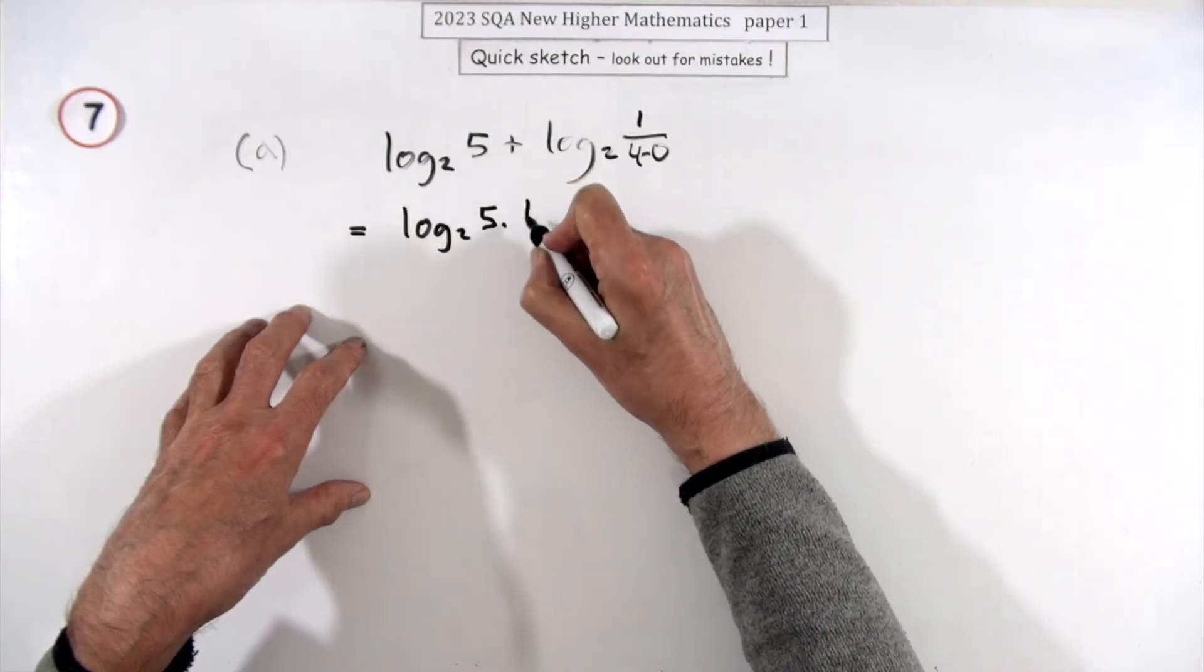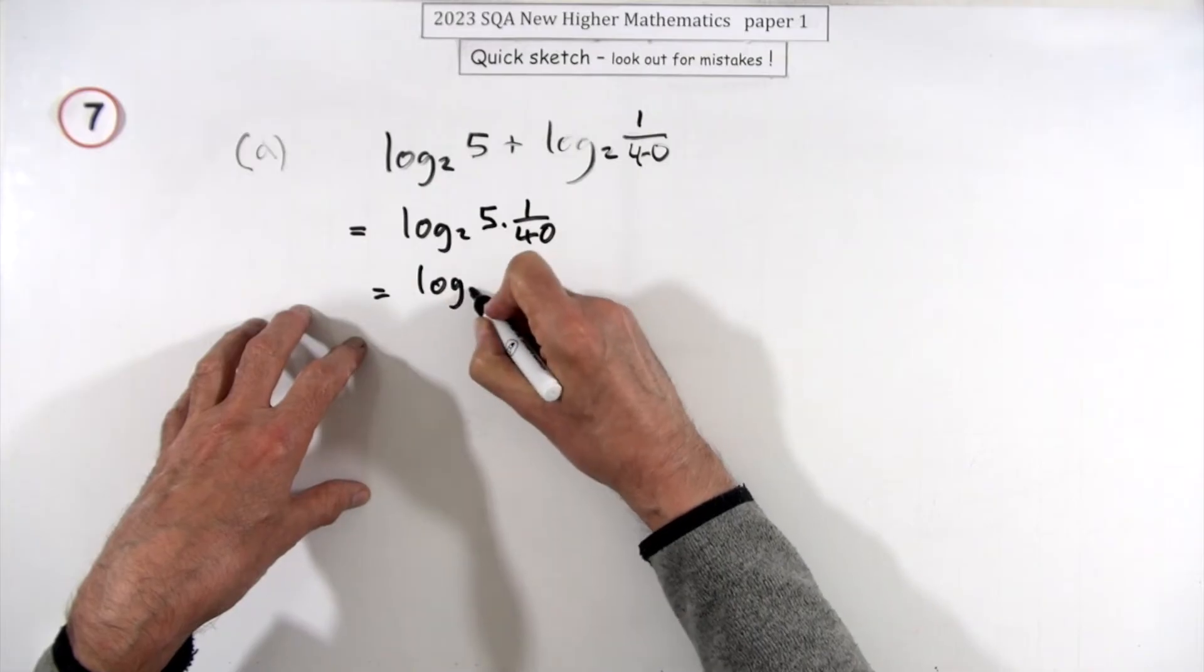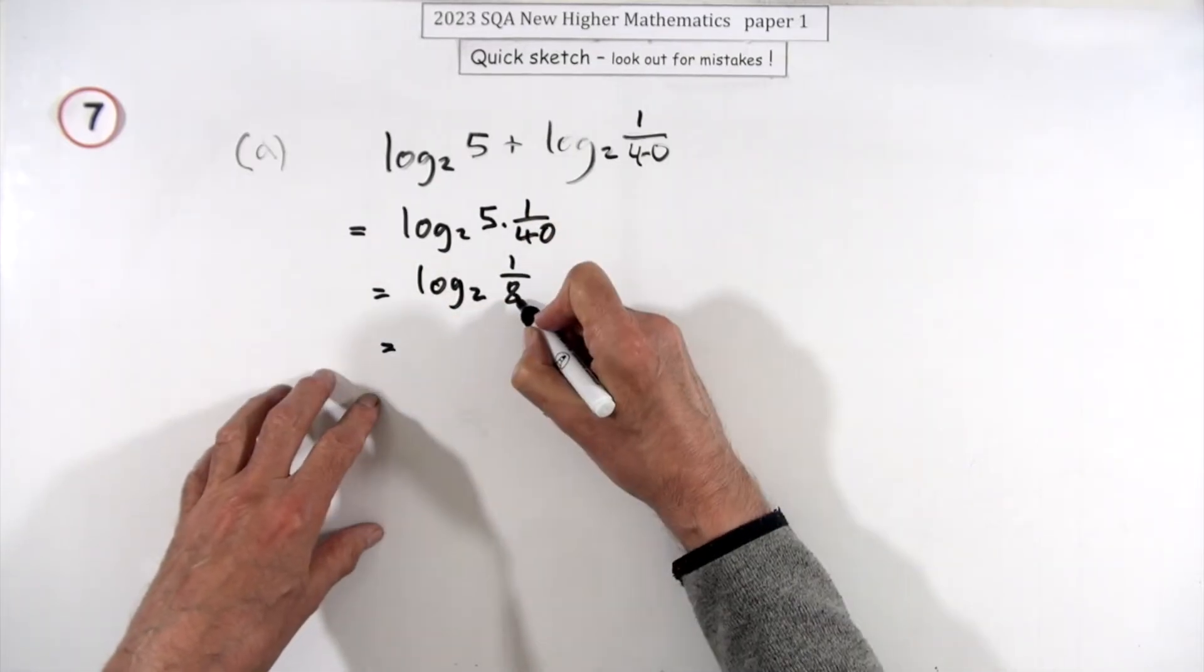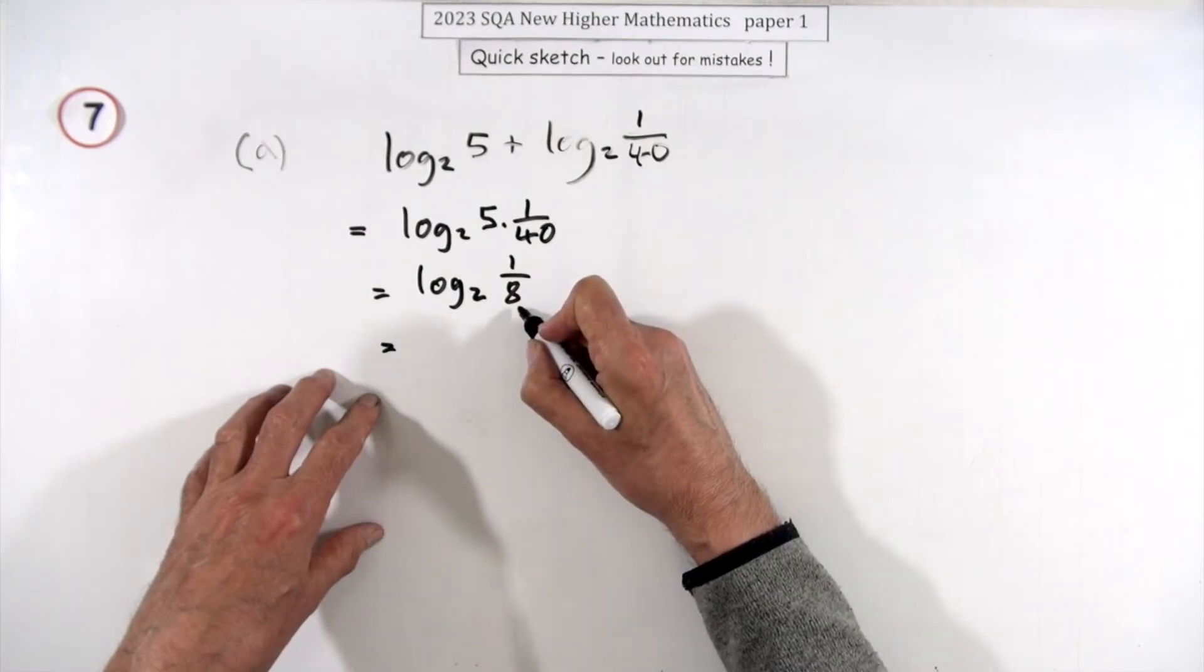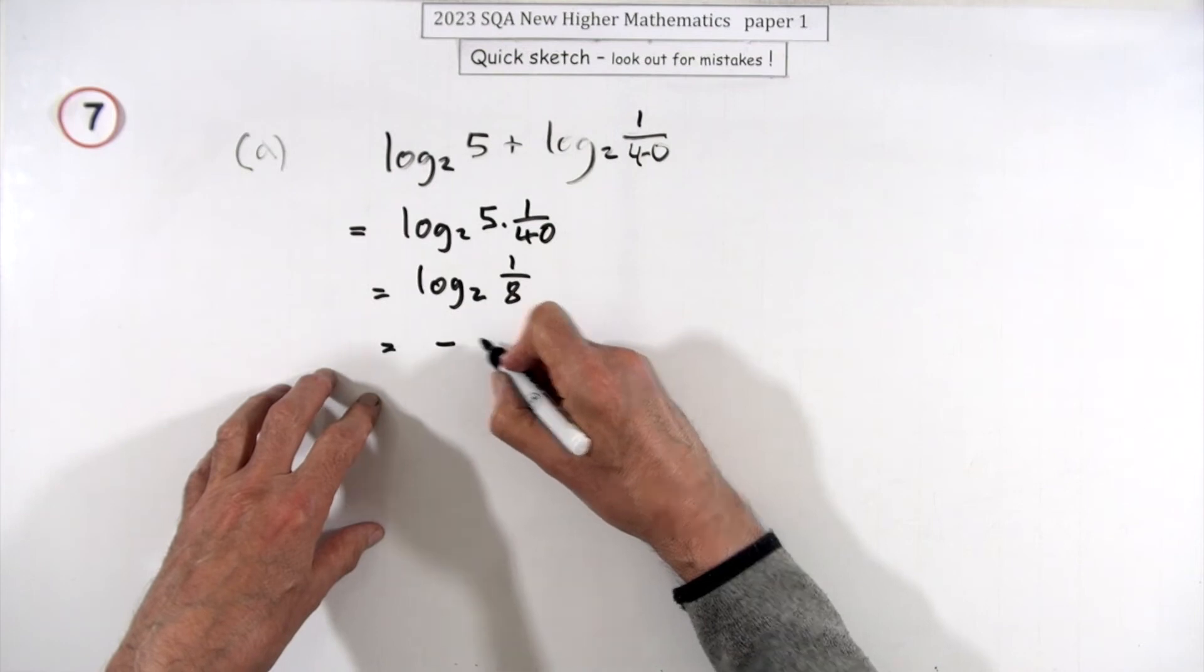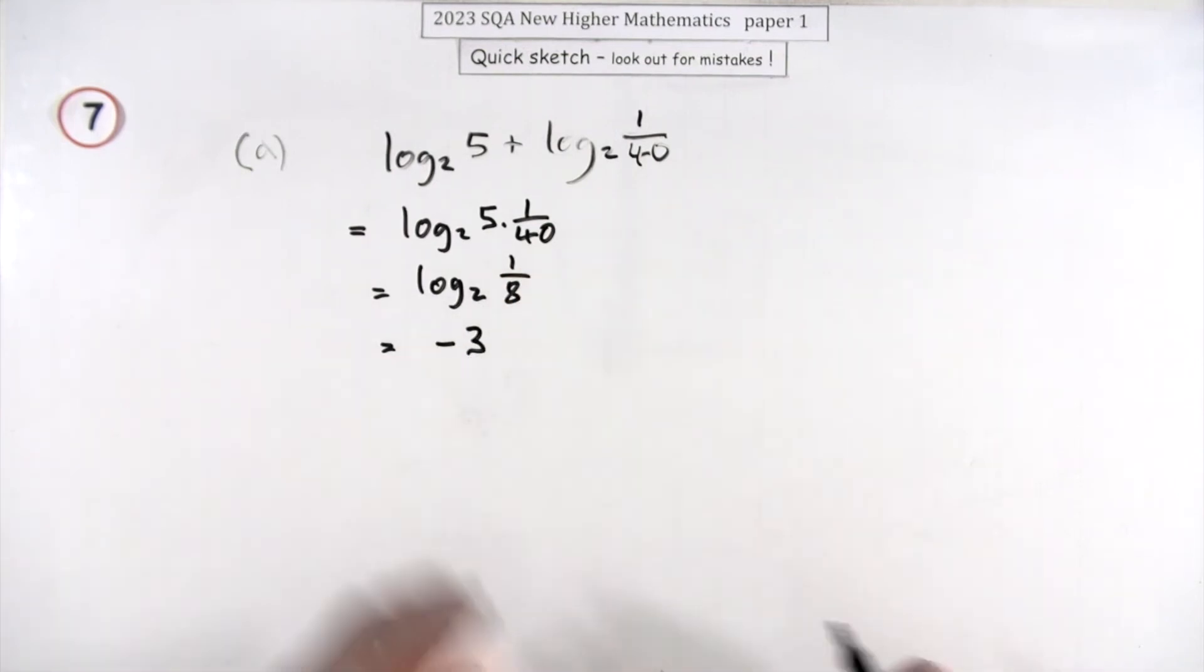So that's the logarithm base two of one eighth, and then you should recognize that you've got a power of two there. It's a negative power because it's a reciprocal, it's a fraction, it's less than one, and it's two cubed, so negative three is the answer.